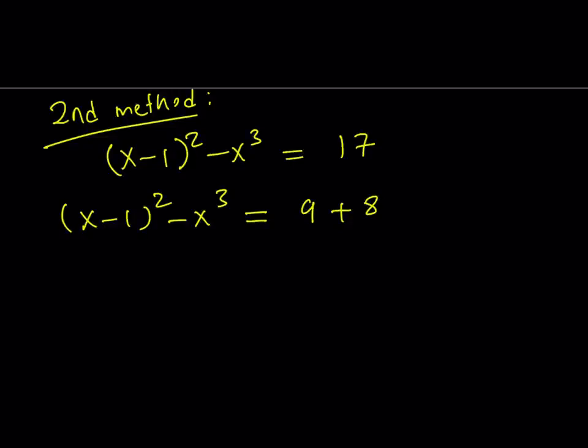Why? Because 9 is a perfect square. 8 is a perfect cube. And everything is perfect. So let's go ahead and put the 9 next to x minus 1 squared and bring the x cubed over here so that the two cubes can be added together.